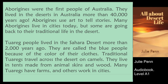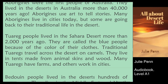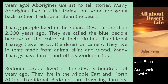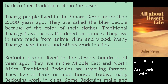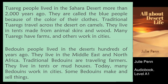Tuareg people lived in the Sahara Desert more than 2,000 years ago. They are called the blue people because of the color of their clothes. Traditional Tuaregs travel across the desert on camels. They live in tents made from animal skins and wood. Many Tuaregs have farms and others work in cities.